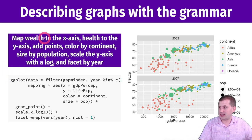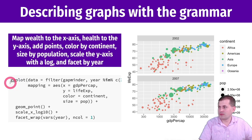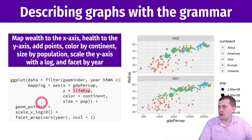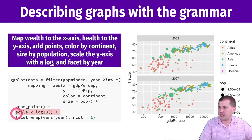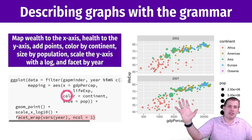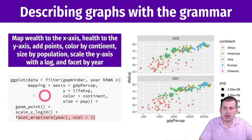Once you translate that description to code, it follows directly: x equals GDP per capita, y equals life expectancy, color to continent, size by population, geom_point, scale_x_log10, facet by year. Just following that sentence, you can build the code for the plot and it creates it. That works for any type of plot.